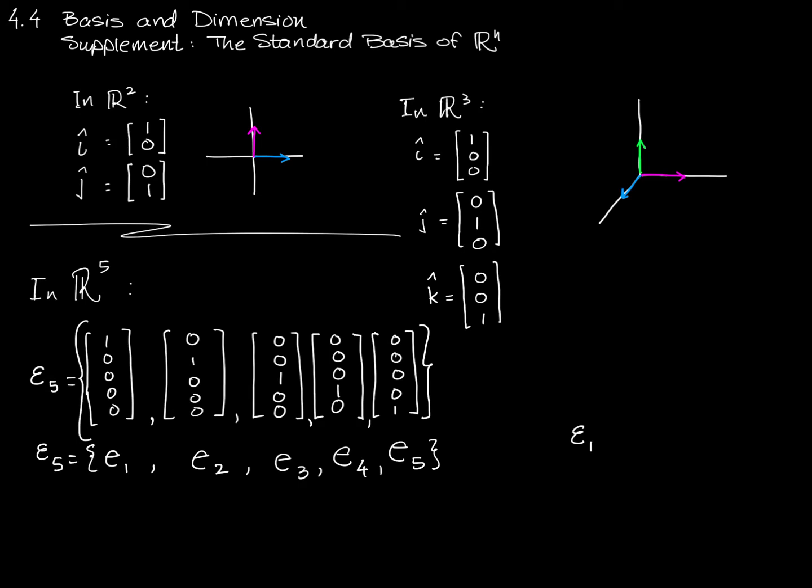So now when I say, for example, e sub 17, you'll know what I'm talking about, but I don't have to write out e sub 1, e sub 2, all the way up to e sub 17. And I certainly don't have to write out 1 and 16 zeros and so on.